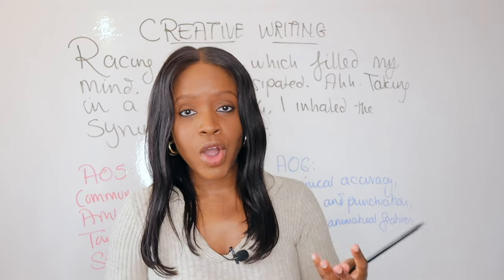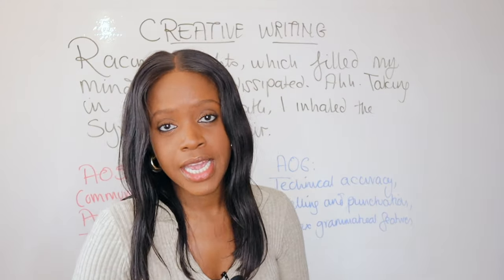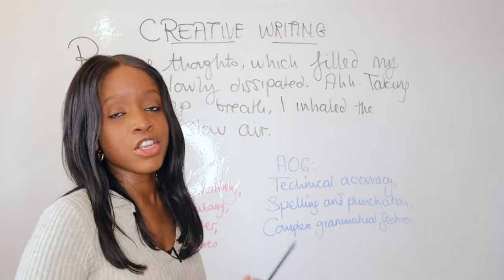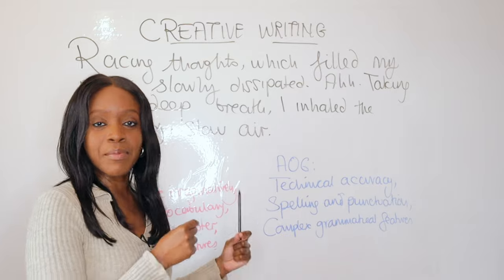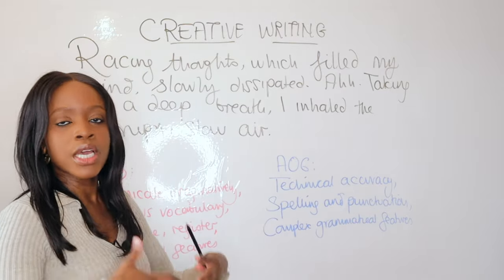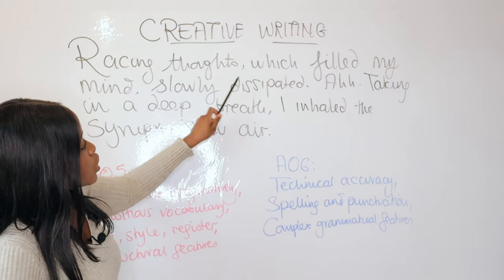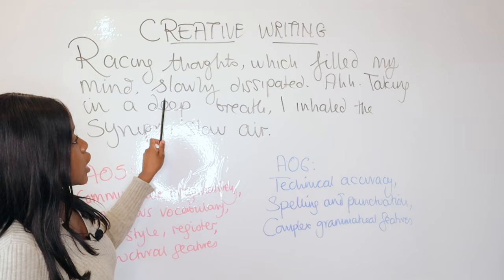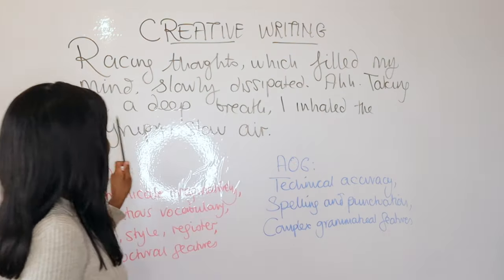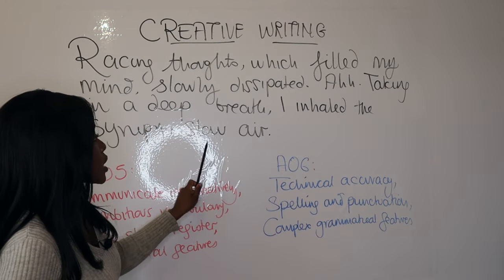Let's look at the sentence starter you can use for this paragraph, and I'll tell you why it fulfills both AO5 and AO6 marks. Here is the starting sentence for your final ending paragraph, whether it's a nice ending or a cliffhanger: 'Racing thoughts, which filled my mind, slowly dissipated. Ah. Taking in a deep breath, I inhaled the syrupy slow air.'